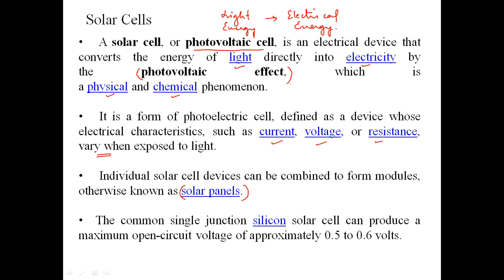A common single-cell silicon solar cell can produce a maximum open-circuit voltage of approximately 0.5 to 0.6 volts, depending on the incident photonic energy. Normally the output voltage produced by a unit solar cell is very small. For that reason, we combine many solar cells into a huge solar panel so that collectively we can get a significant amount of current.